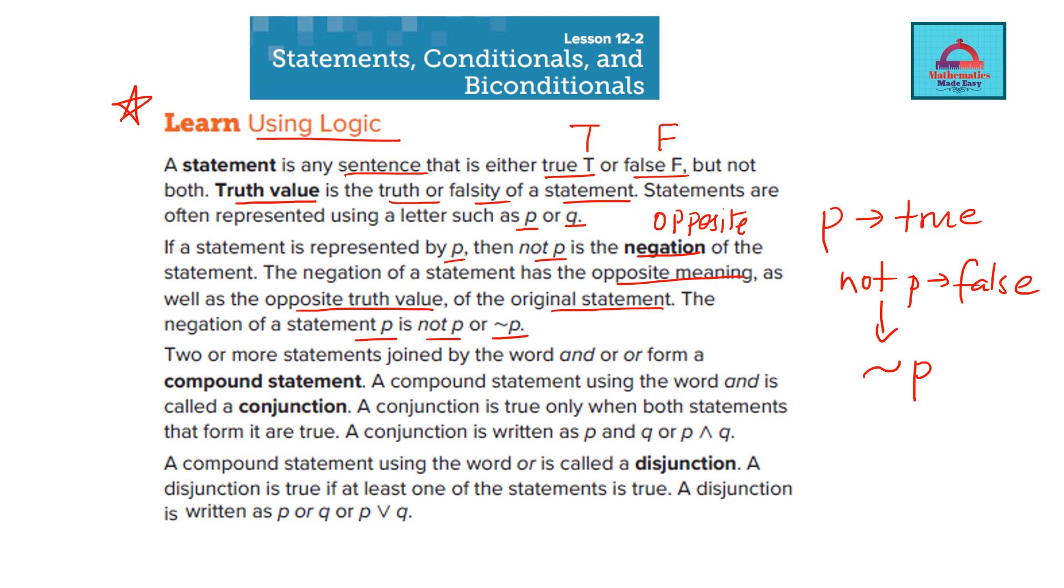So if you see this symbol remember it is negation and you have to do the opposite. Now two or more statements can be joined by the word and or or and these such statements are called compound statements which you will just see in some time and you have to write a compound statement for each conjunction or disjunction in the next slide.